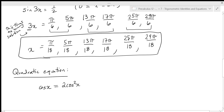So the first thing we might think is to divide by cosine x — right? Wrong. We never divide by a variable.